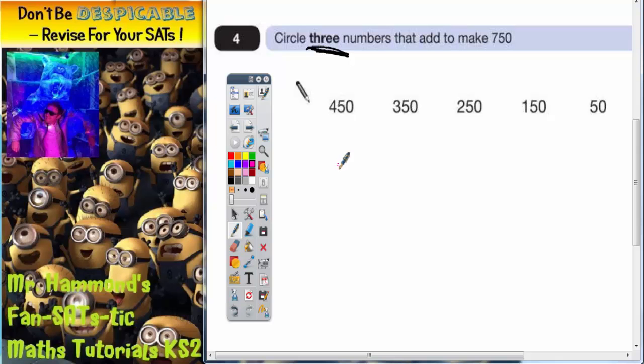Easiest thing to do is maybe pick 2 of the numbers and then see if what you need is the 3rd number to make it up to 750.